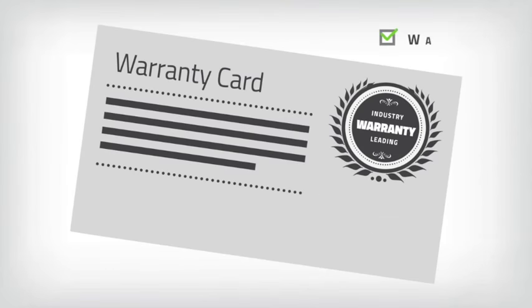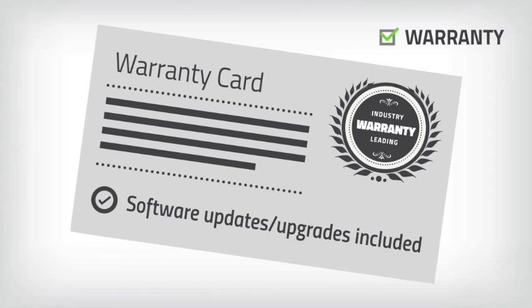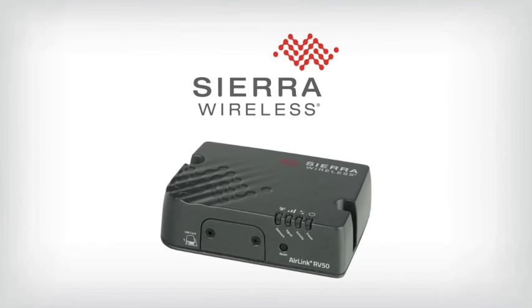And finally, look for warranties, including support and software updates that reduce your total cost of ownership. Introducing the AIRLINK RAVEN RV50 Industrial LTE Gateway.